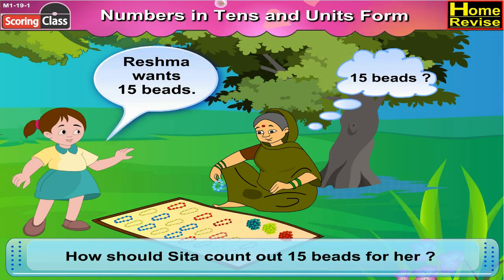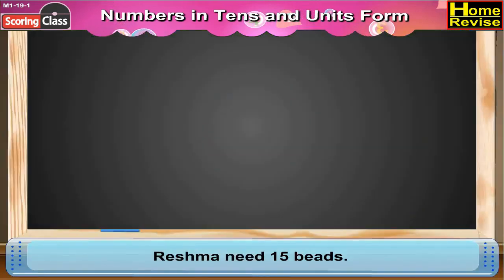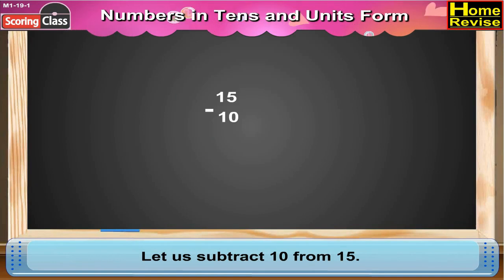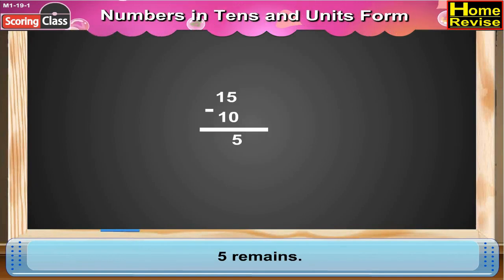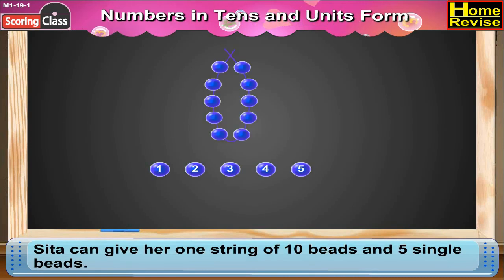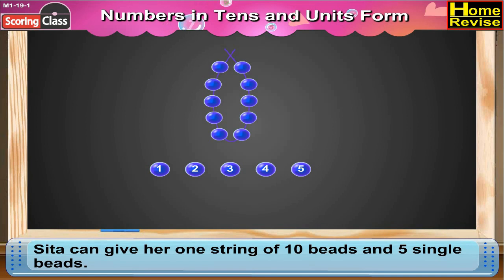It is very simple. Veshma needs 15 beads and Sita has each string of 10 beads. Let us subtract 10 from 15 — 5 remains. So, Sita can give her 1 string of 10 beads and 5 single beads. That would be 15 beads.